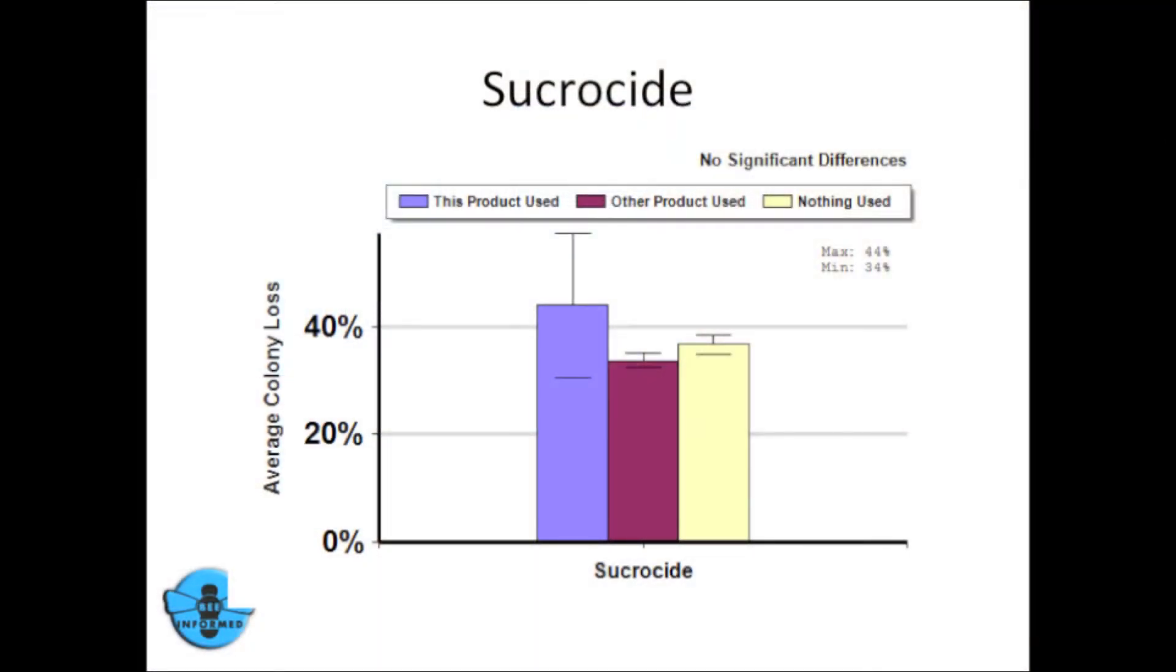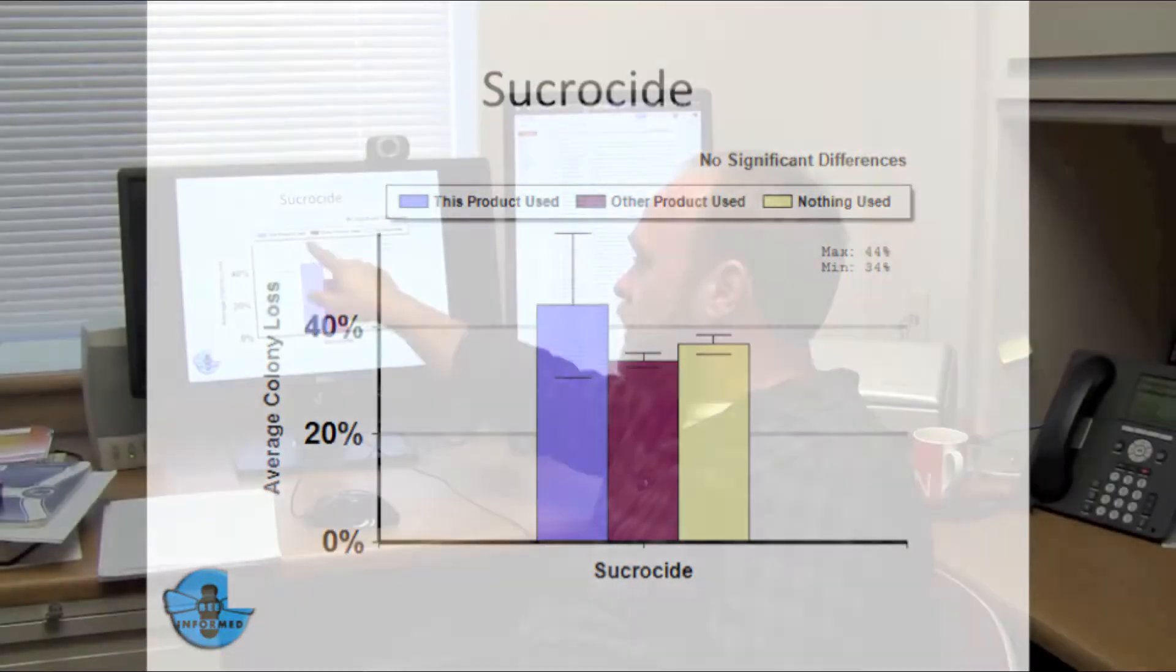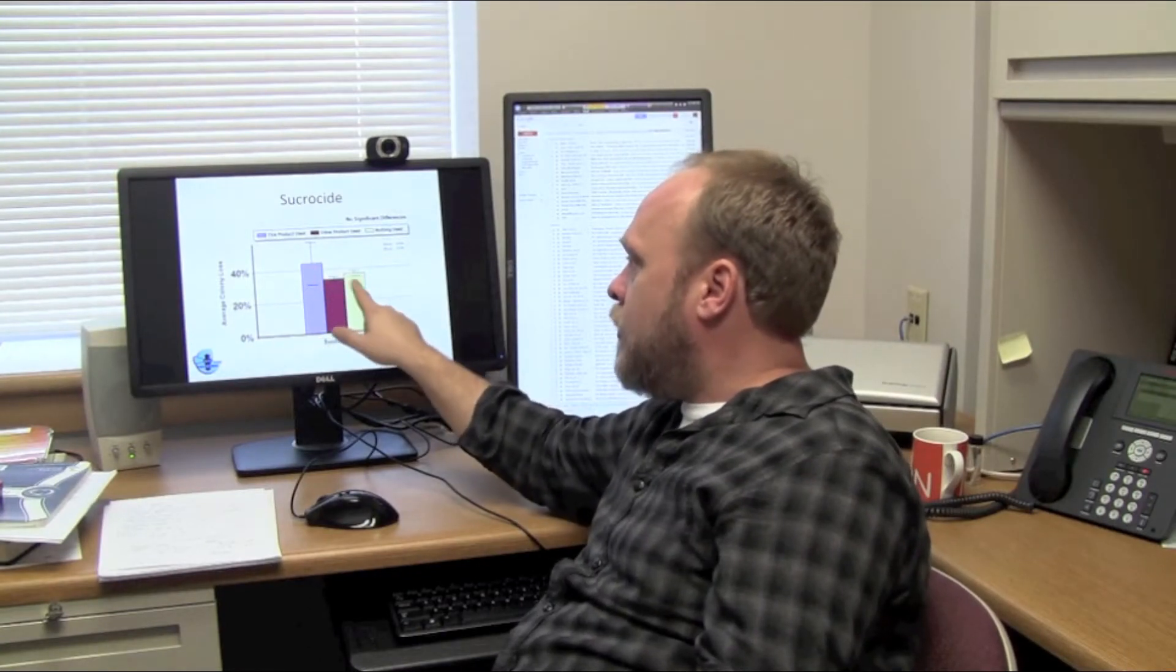Sucrocide is a sugar that acts like a detergent and is sprayed on adult bees. If we look at the people who used Sucrocide, you can see that very few people did use the product, and that explains the large confidence intervals which overlap with people who use nothing at all. So we can't say that people who used that product had better survivorship than those who did not.